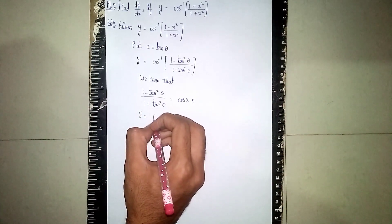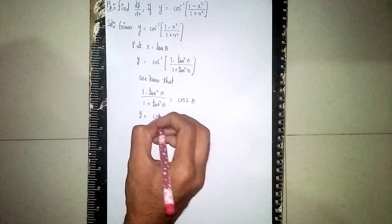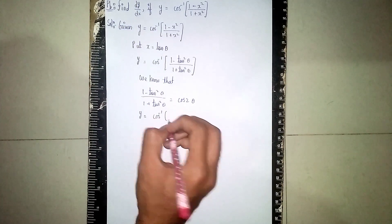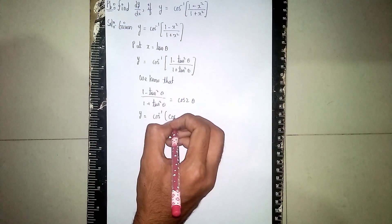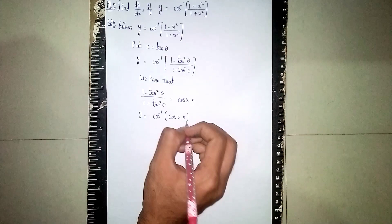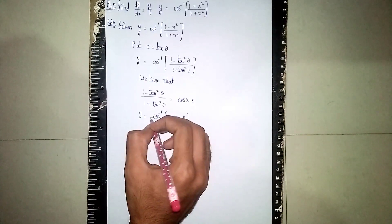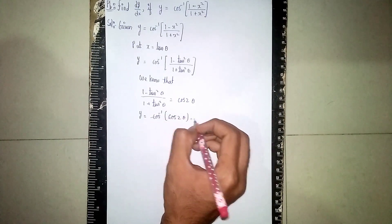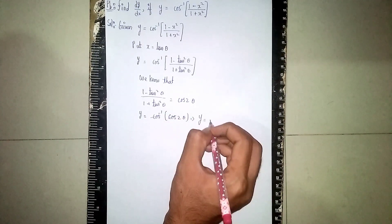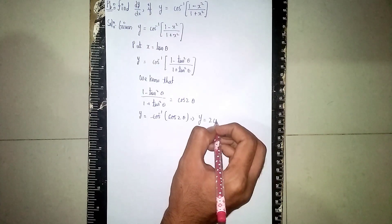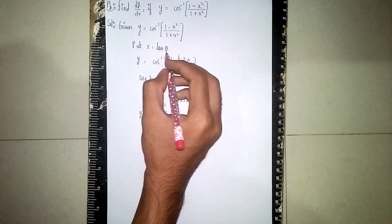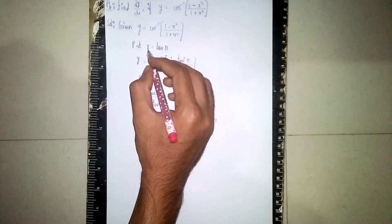Now here, cos inverse and cos cancel each other. So what remains is y is equal to 2 theta. Now we need the value of theta in terms of x.